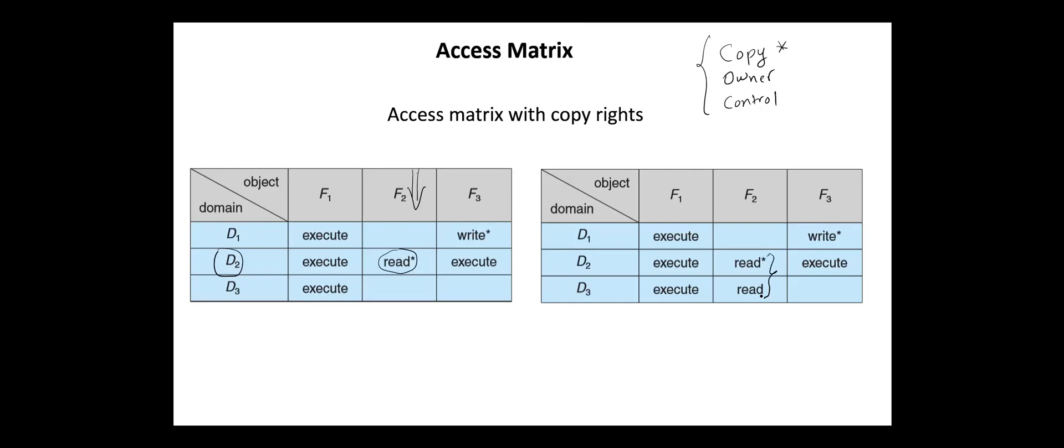Propagation of the copy right may be limited. This means when the right R-asterisk is copied from access IJ to access KJ, only the right R is created. So a process executing in domain DK cannot perform the copy on the right R. Another variation is used when a right is copied from access IJ to access KJ, it's then removed from access IJ.